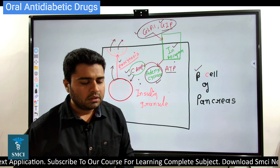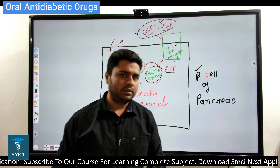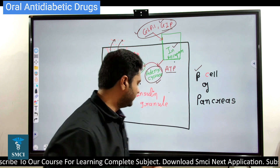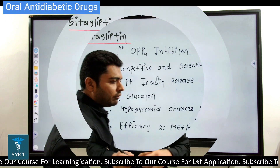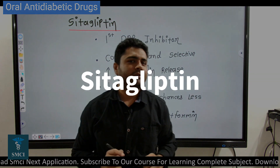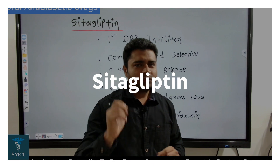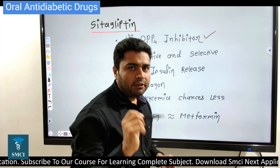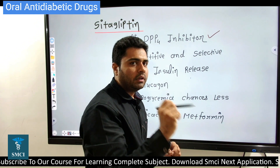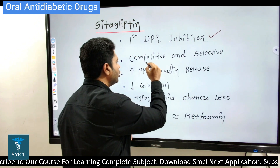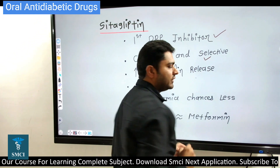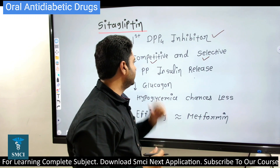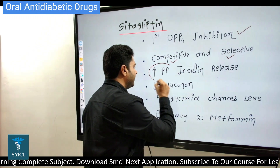We will discuss three drugs mainly from this group: sitagliptin, vildagliptin, and teneligliptin. Sitagliptin is the first DPP4 inhibitor that was developed. It binds with the DPP4 enzyme competitively as well as selectively, so side effects are also reduced because it is a selective inhibitor.